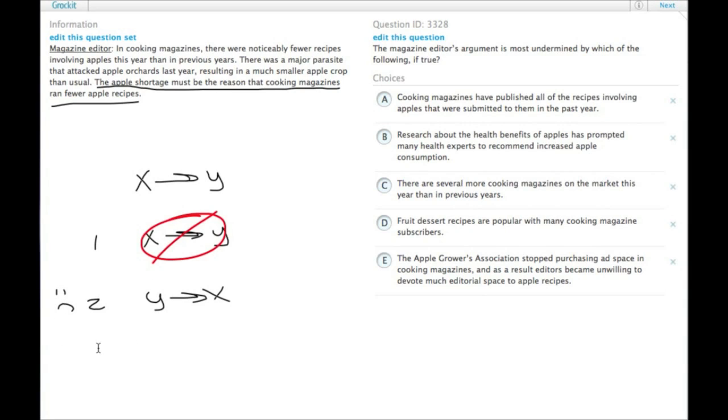Number three is that there's actually some other cause, that it's not X that caused Y, but rather Z caused Y. Something else other than the apple shortage caused cooking magazines to run fewer apple recipes. So we need either something like way number one or way number three.